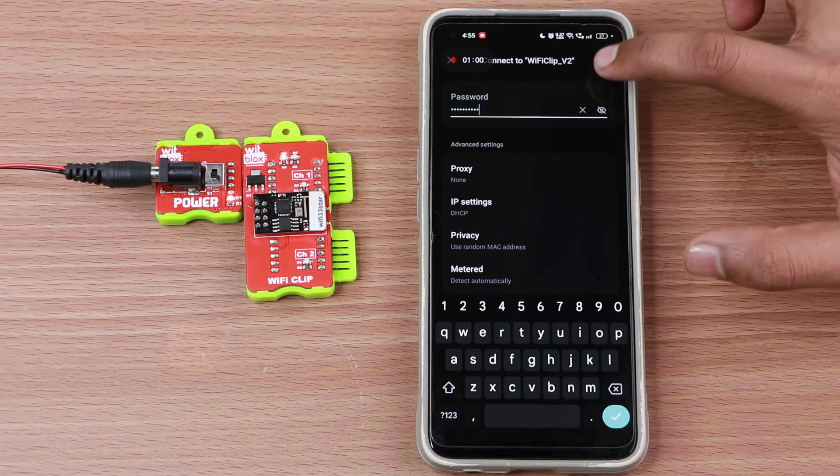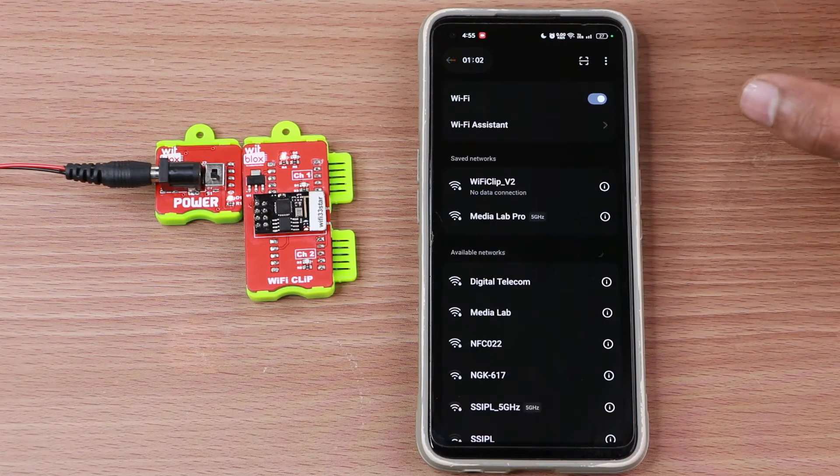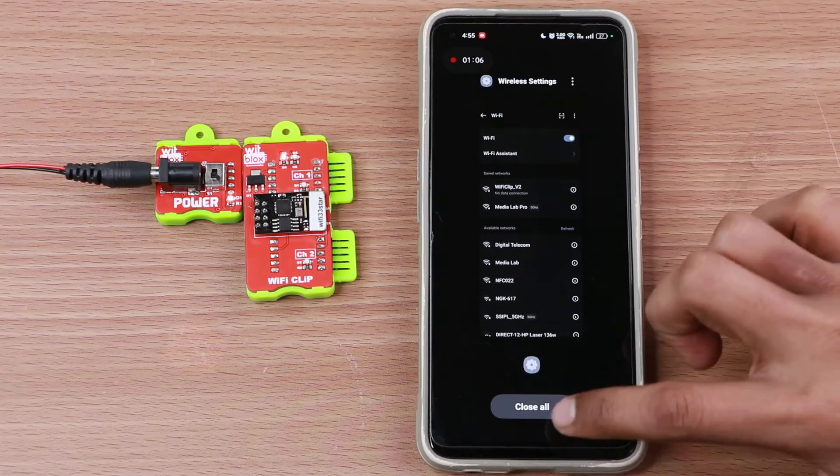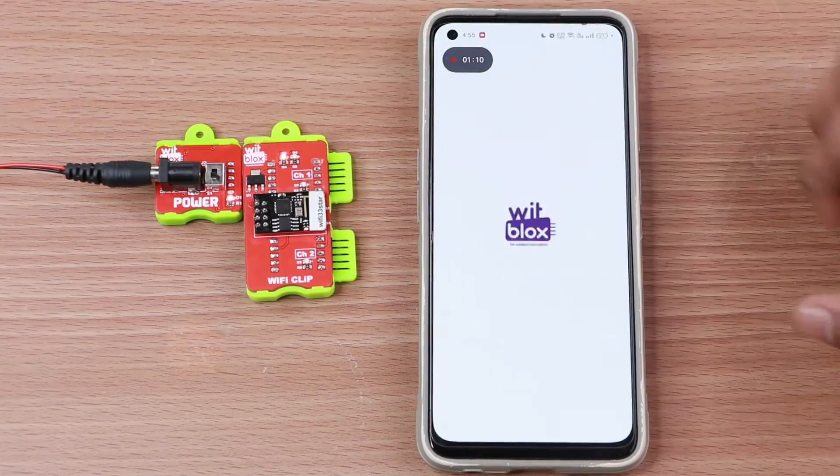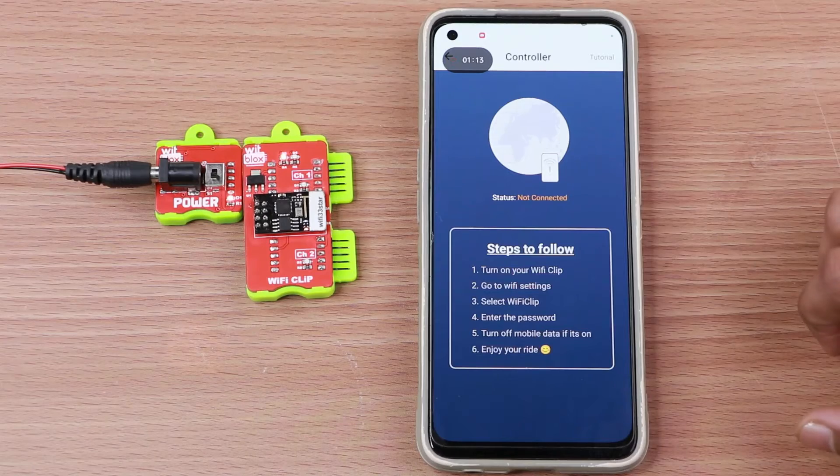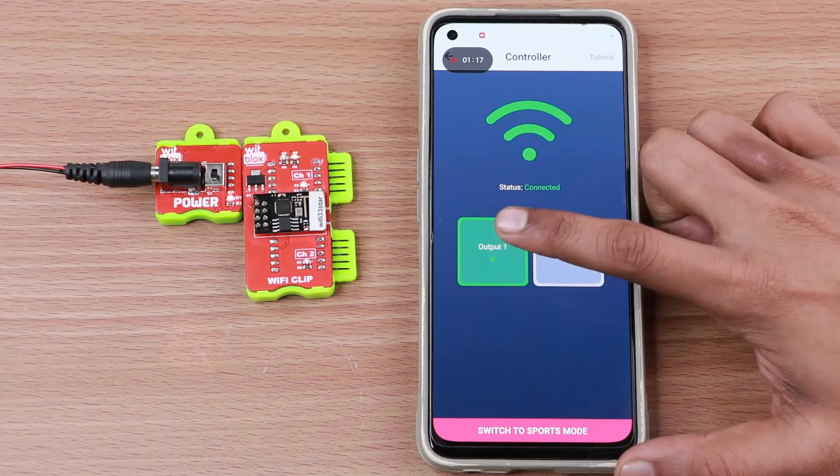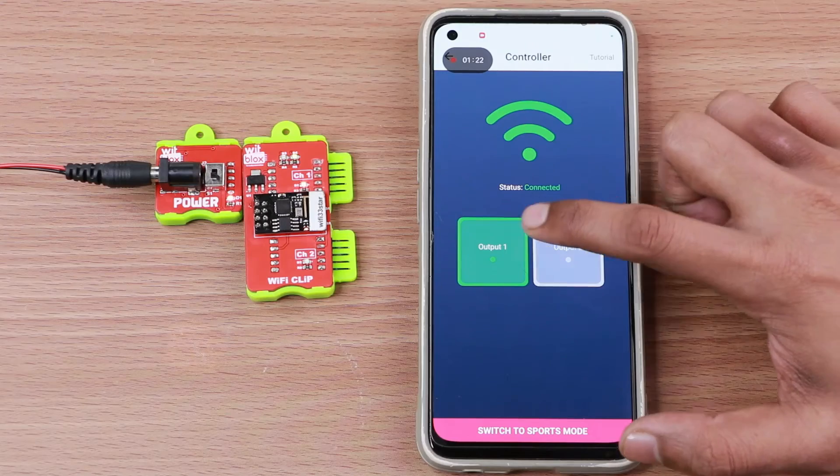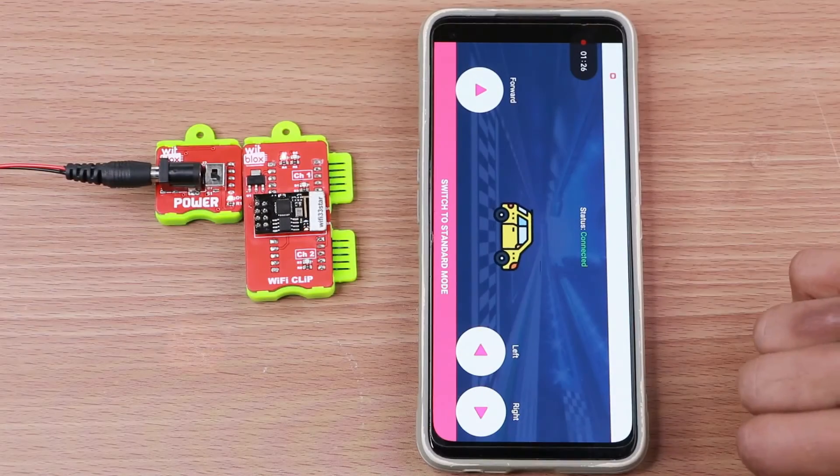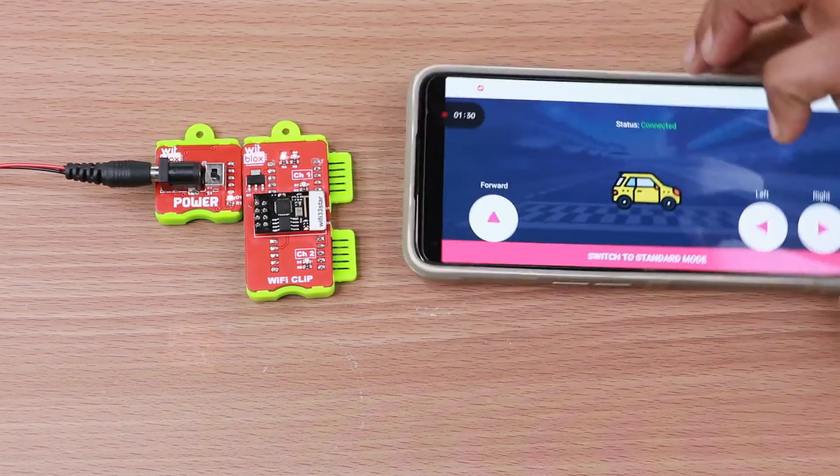Once the password is entered correctly, it will display connected. Now head over to the Wi-Fi Clip app, select two-channel Wi-Fi blocks. There are two channels, outputs waiting for your command. Attach the blocks logic on the board and voila, your Wi-Fi bike is now ready for use.